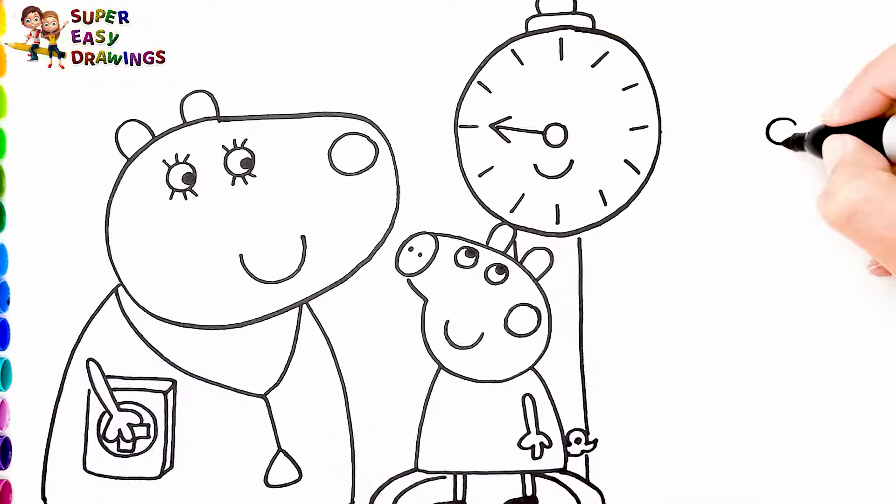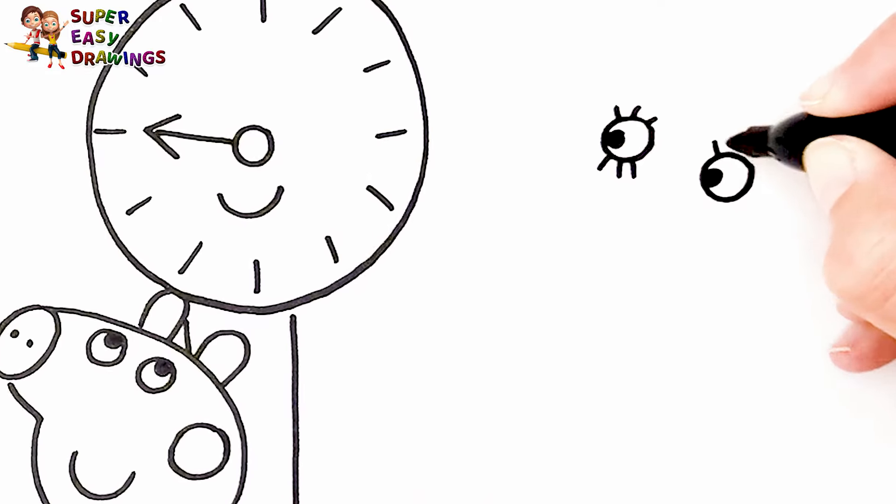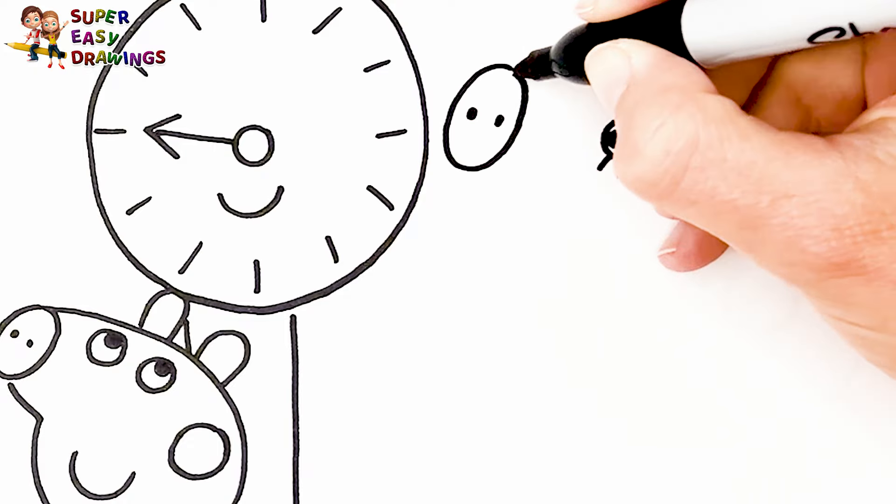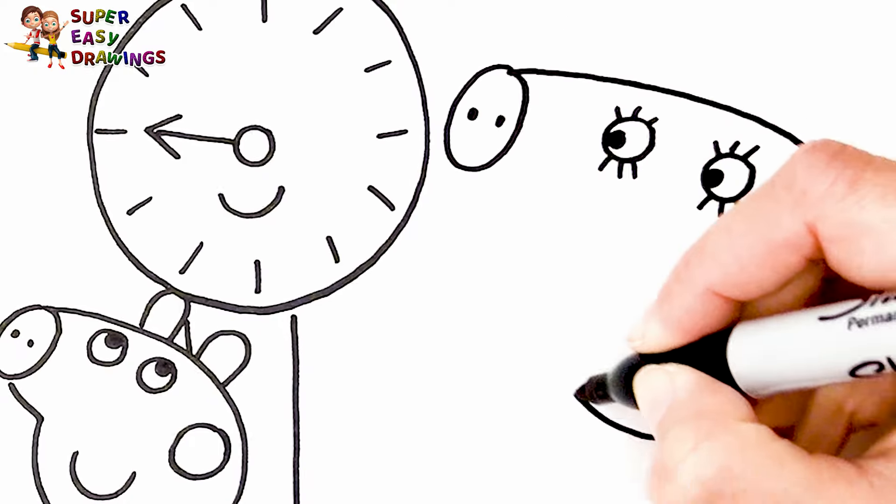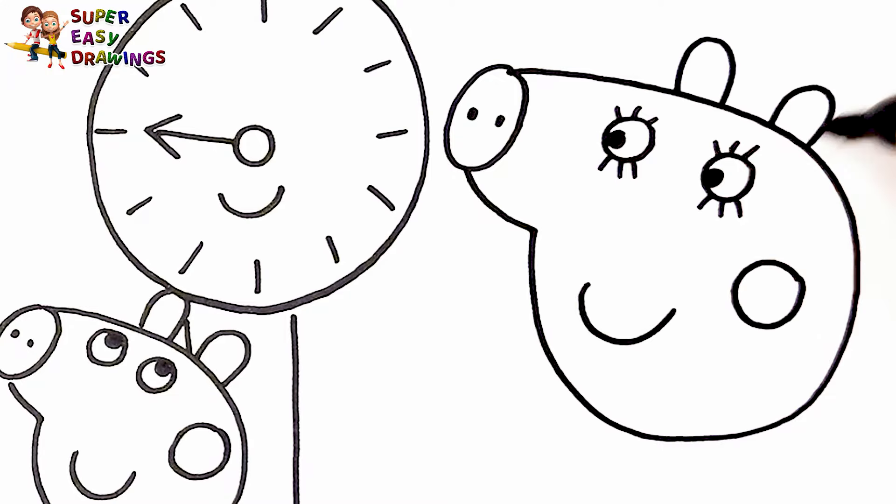Let's draw Mommy Pig! I start with Mommy Pig. I draw her eyes, her nose, and the shape of her head. Then I draw her smiling mouth, a circle for her cheek, and her two ears.